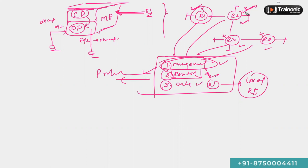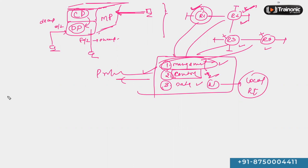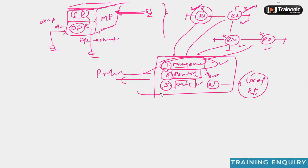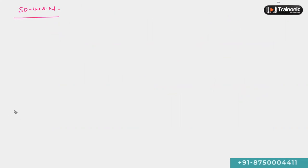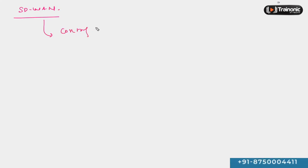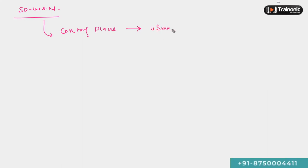When we use the software-defined approach to manage LAN or WAN devices, we generally separate the management plane, control plane, and data plane functionalities from the device. For example, in SD-WAN technology — which is used to manage WAN devices — the control plane of your network is centralized with the help of a controller called the vSmart controller.